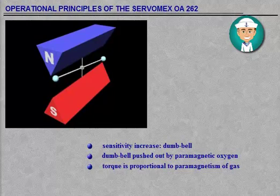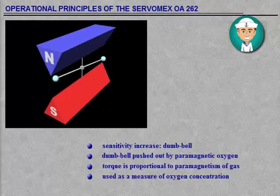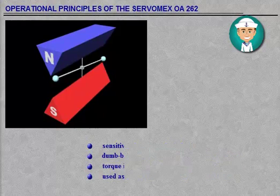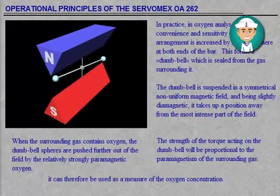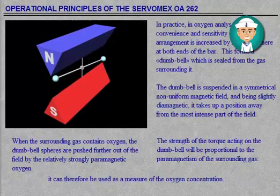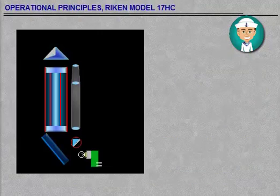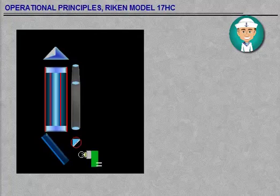The strength of the torque acting on the dumbbell will be proportional to the paramagnetism of the surrounding gas. It can therefore be used as a measure of the oxygen concentration.